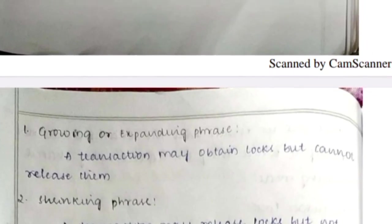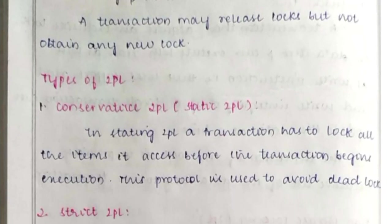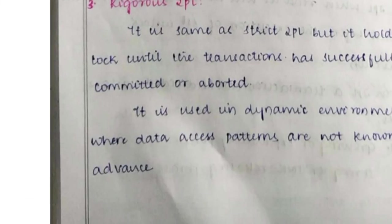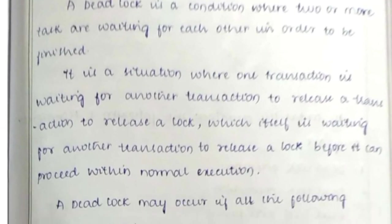Two-phase locking (2PL) is also an important topic. Types of 2PL include: Strict 2PL, Conservative 2PL, and Rigorous 2PL. The most important question from this section is deadlock. A deadlock is a condition where two or more tasks are waiting for each other in order to be finished.